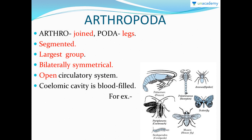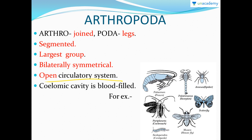Arthropoda is the largest group in the animal kingdom — insects and other arthropods are found everywhere. 'Arthro' means joint and 'poda' means legs, so they have jointed legs. They are also segmented and bilaterally symmetrical. They have an open circulatory system — blood does not flow in well-defined blood vessels; instead blood is filled in the coelomic cavity. There are many examples of arthropods.